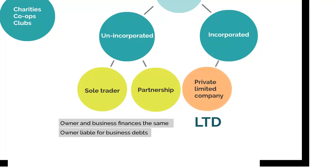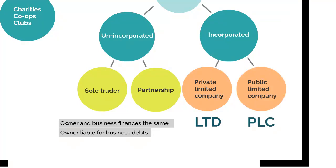An incorporated organization is when you create a legal entity to carry your business profit and loss, and it keeps them separated from your own personal finances. The first of these might be a private limited company, where all the shares in the organization are privately held and can't be sold on the stock market. And then there's a public limited company, where the shares can be sold on the stock market.